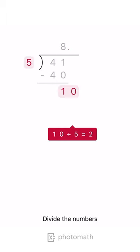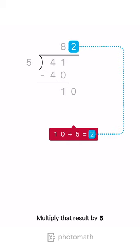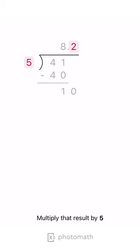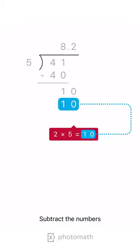Divide the numbers. Write the result, 2, in the answer line. Multiply that result by 5. Write the product under the number we initially divided. Subtract the numbers.